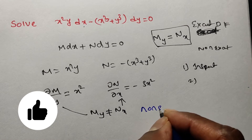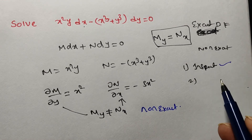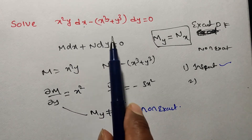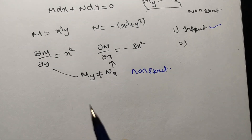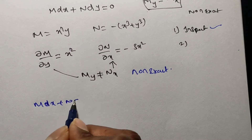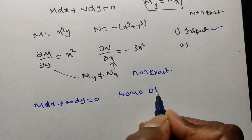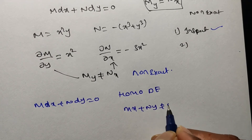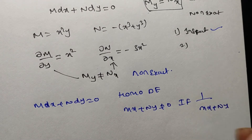Since it is non-exact, we go to the first method: the inspection method. But by observation, inspection is not possible in this case, so I am going to Rule 2. Rule 2 states: if M dx + N dy = 0 is a homogeneous differential equation and Mx + Ny ≠ 0, then the integrating factor is 1/(Mx + Ny).